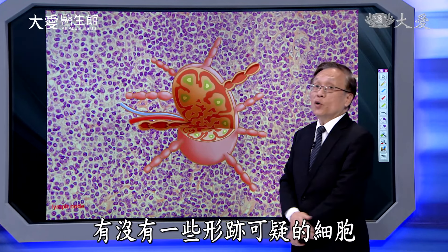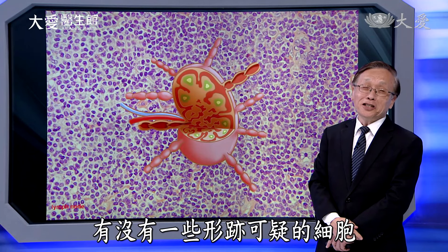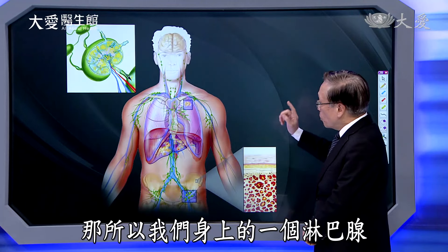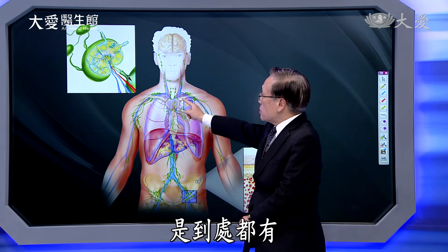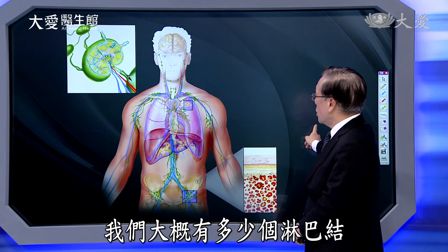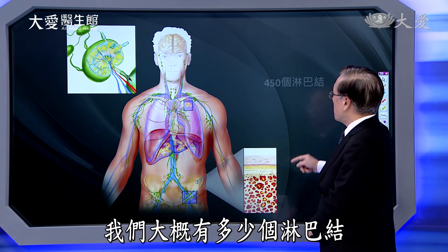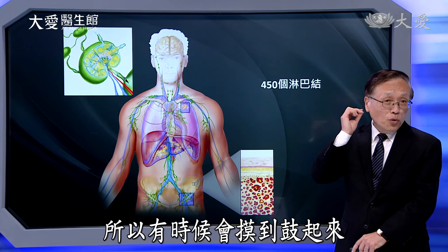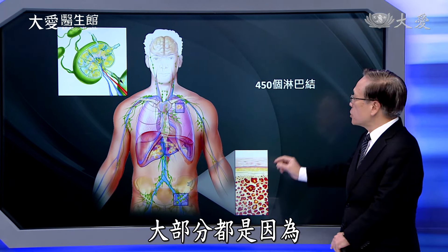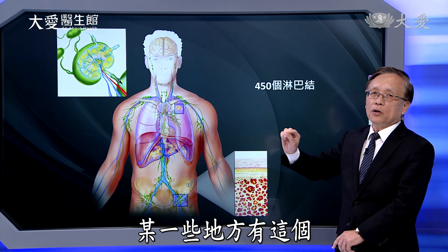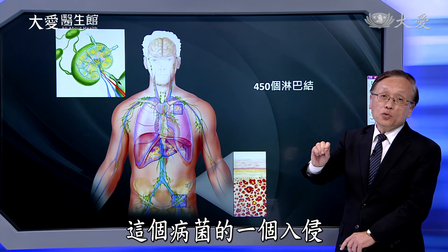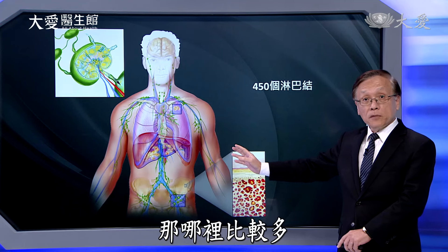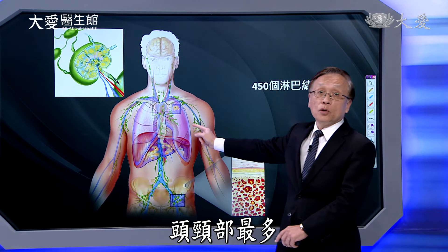淋巴线里有这么多细胞，是因为淋巴溢过来的结果。在这个地方要进行把关的动作，好像是海关、警察等等，来看看有没有行迹可疑的细胞。所以淋巴线有保护我们的作用，我们身上到处都有淋巴线，大概有四百五十个淋巴结。摸到鼓起来，大部分是因为某些地方有病菌入侵所造成的。